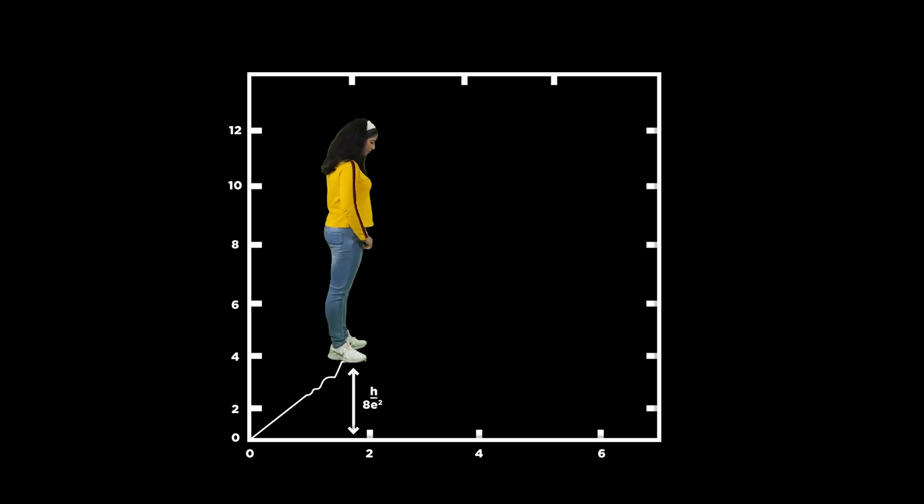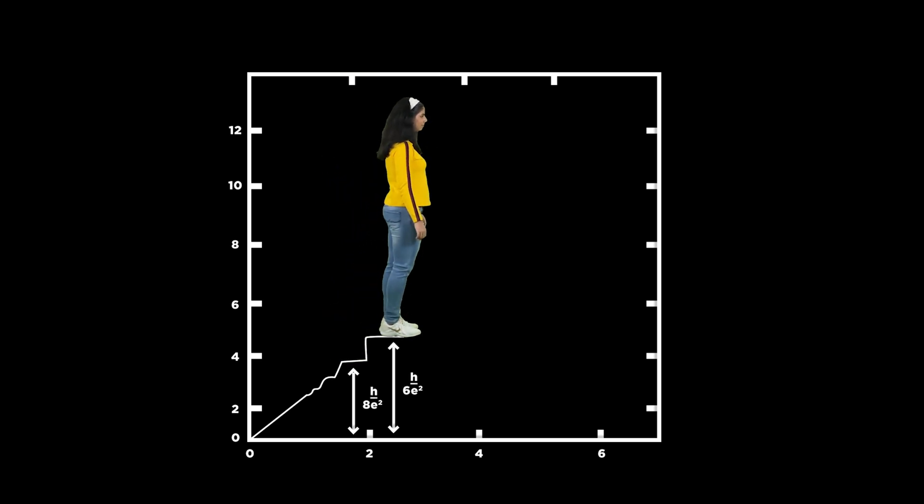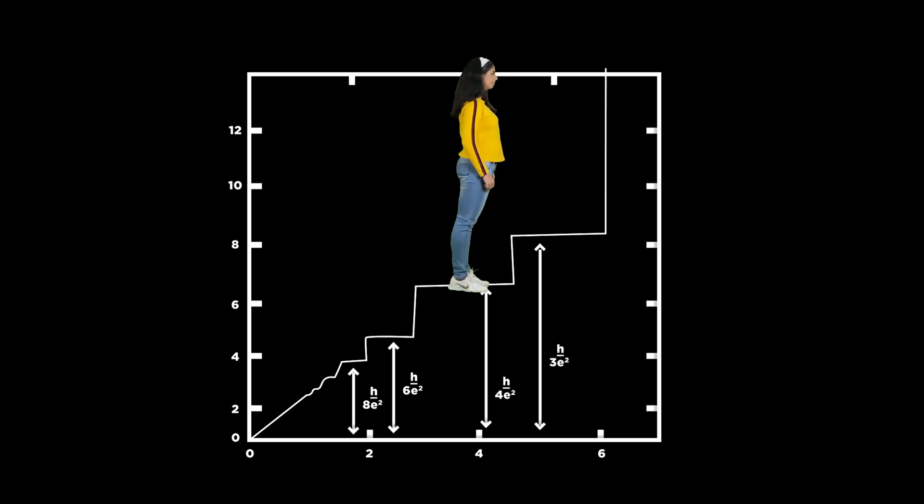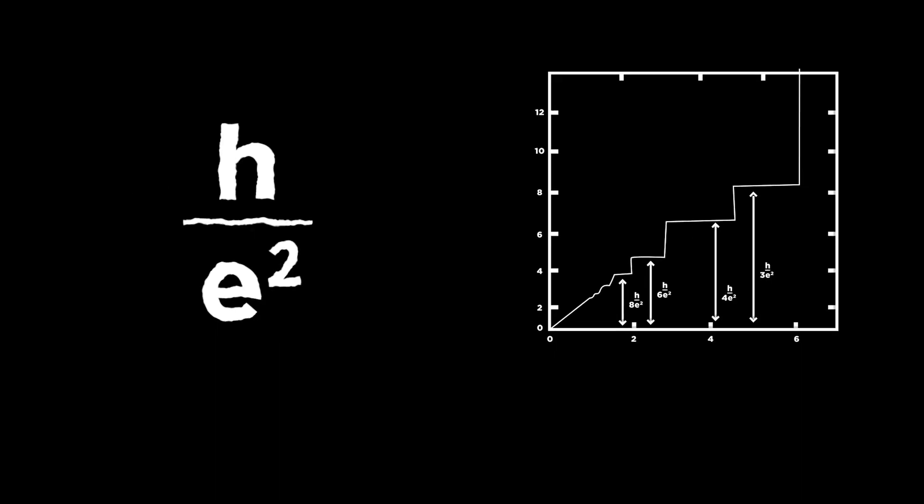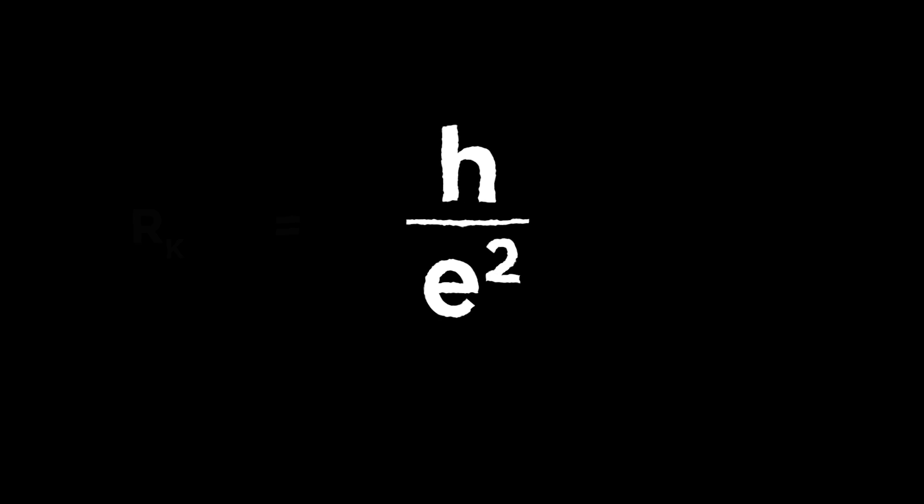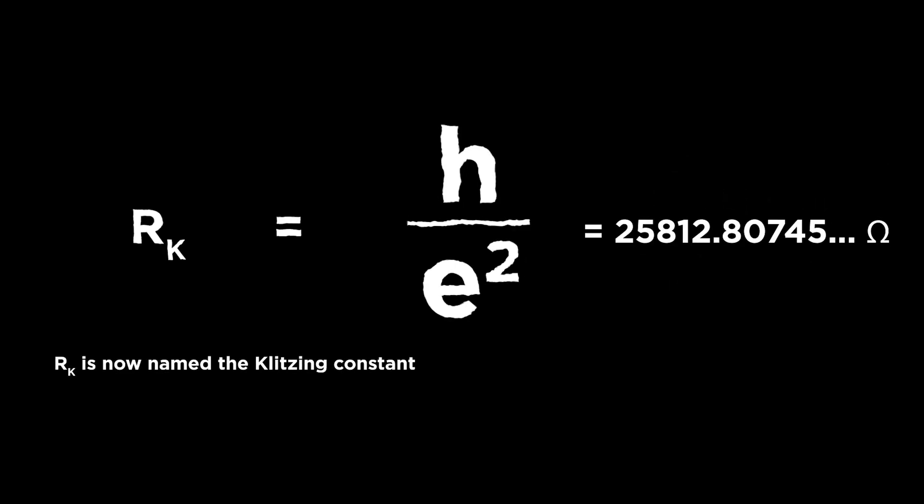...but the graph jumped up in discrete steps and plateaued before the next jump. Surprisingly, the plateaus were multiples of an exceedingly precise unit: the ratio of Planck's constant and the electron's charge. This ratio was named after Klitzing, and he won a Nobel.